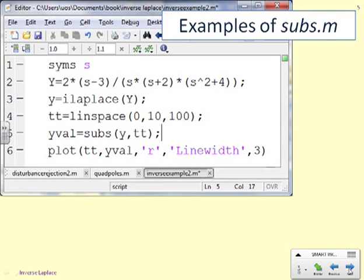Another example of subs. This one includes the generation of a plot. So again, the first three lines we've made s symbolic. We've defined our transform, a more complicated one here. 2 times (s-3) over s times (s+2) times (s^2+4). Not something you'd want to do by hand. And then we found y(t) using iLaplace capital Y. The next line, tt equals linspace(0, 10, 100), defines the values of time that we're interested in. So it says, give me 100 values of time equally spaced between 0 and 10 seconds.